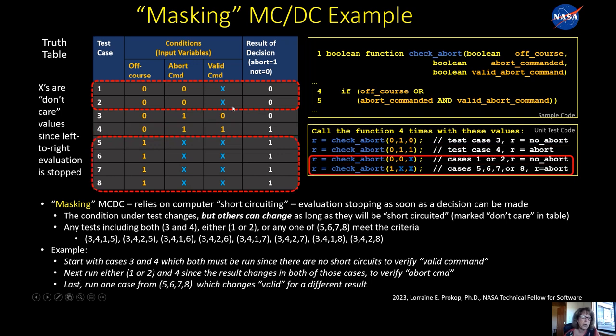And then in the next set of tests, you keep test four because that has a one and you can pick either of these test cases one or two to validate the abort_command variable because these valid_commands are don't care. These are zero and the result changes. Similarly, the third one, you can have either of these one or two and then you add one of these five, six, seven or eight. And as I mentioned, any combination of those will meet the requirement. And that's reflected in this code by having an X here. You can call these with any either zero or one for these X's and you can still meet the requirement.